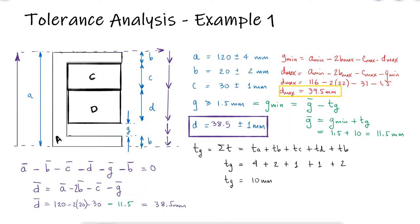If the maximum dimension for D is 39.5, and we know its tolerance is 1 millimeter, then its nominal value is 38.5 millimeters.